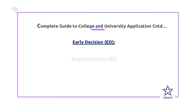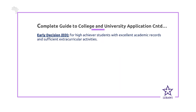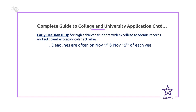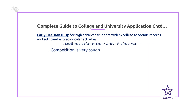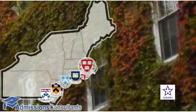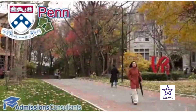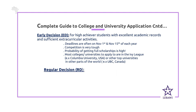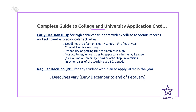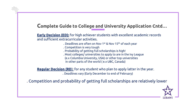Early decision is a type of application for high-achieving students with excellent academic records and sufficient extracurricular activities. Deadlines are on November 1st and November 15th of each year. Competition is very tough, but the probability of getting a good scholarship is high. Most colleges applied to under early decision are Ivy League schools, such as Columbia University, or other universities such as UBC in Canada. For regular decision, students apply later in the year, with deadlines between December and end of February. Competition and probability of getting a full scholarship are relatively lower.